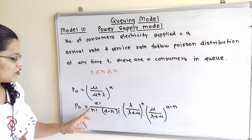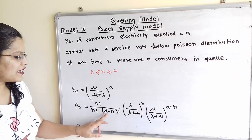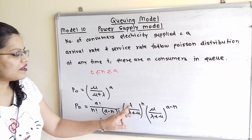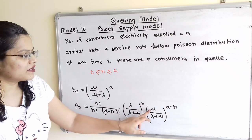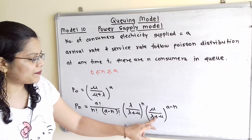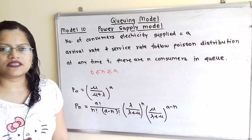To calculate the probability of n number of consumers in queue, Pn equals a factorial divided by n factorial times (a minus n) factorial, times lambda divided by lambda plus mu raised to n, times mu divided by lambda plus mu raised to (a minus n).